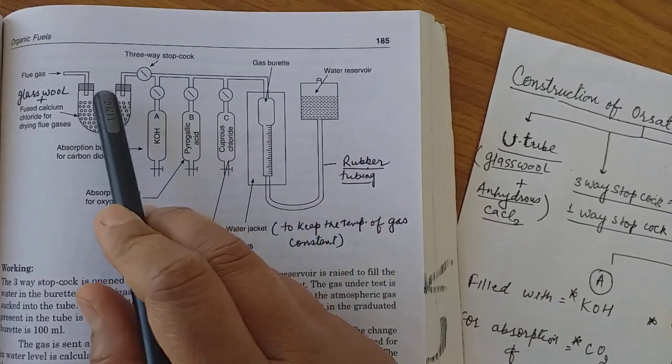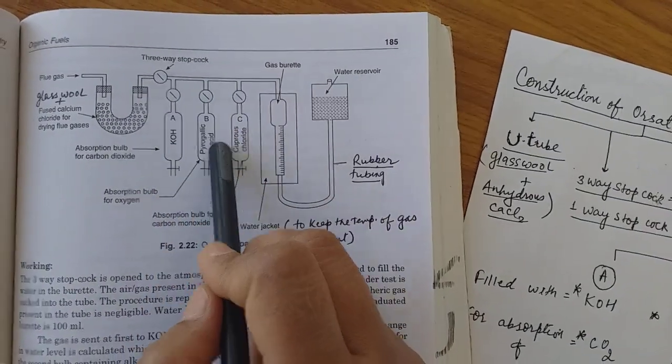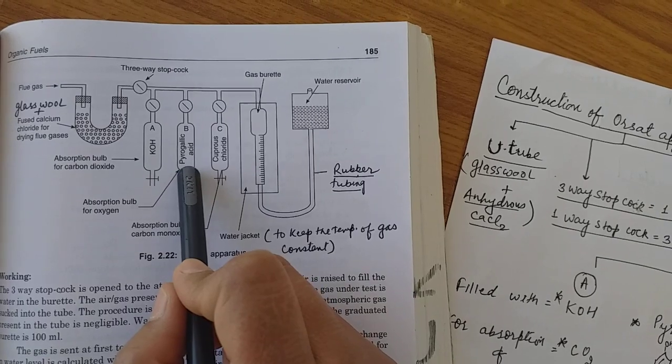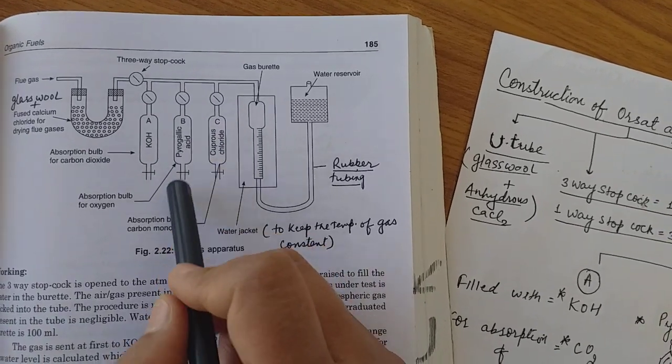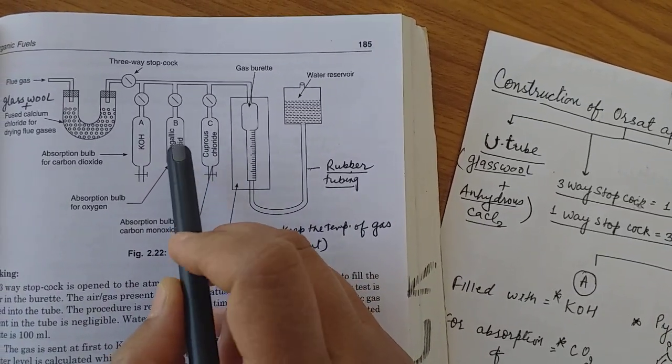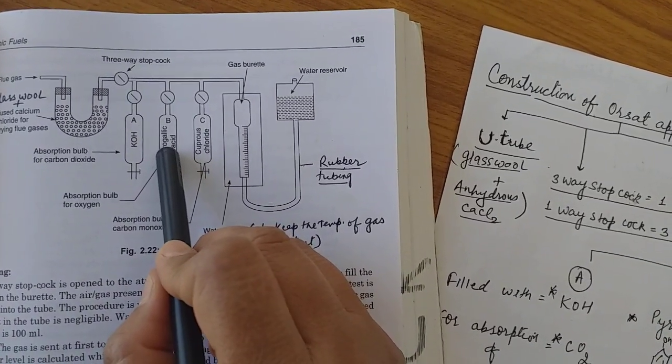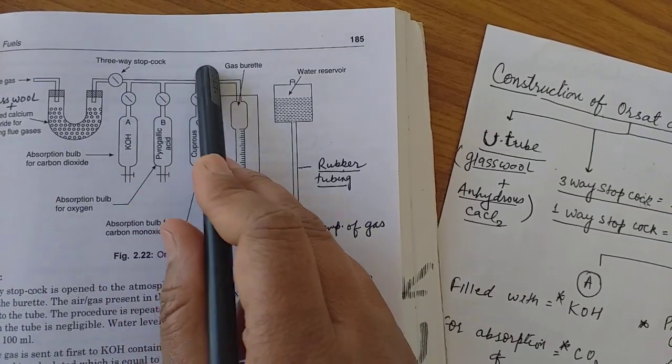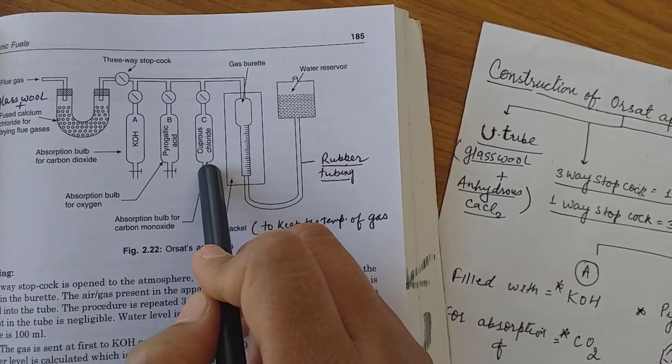After that, the gas is coming to the second bulb which contains pyrogallic acid, also called 1,2,3-trihydroxybenzene. It absorbs the oxygen. After absorption of oxygen, there is again decrease in the pressure here. The water level also decreases.